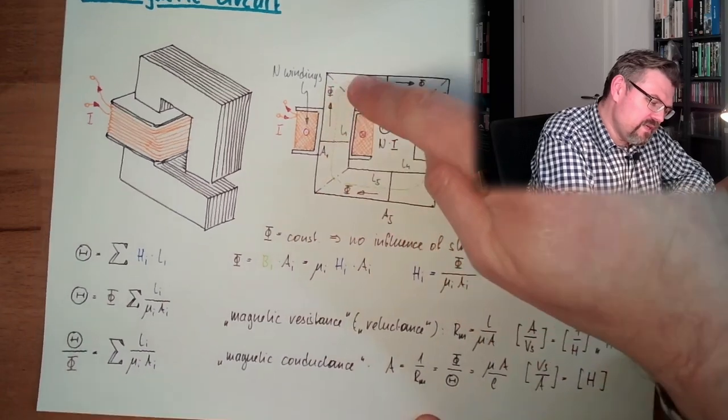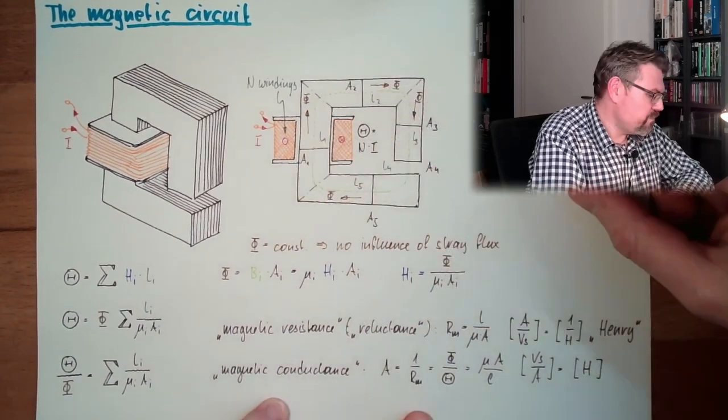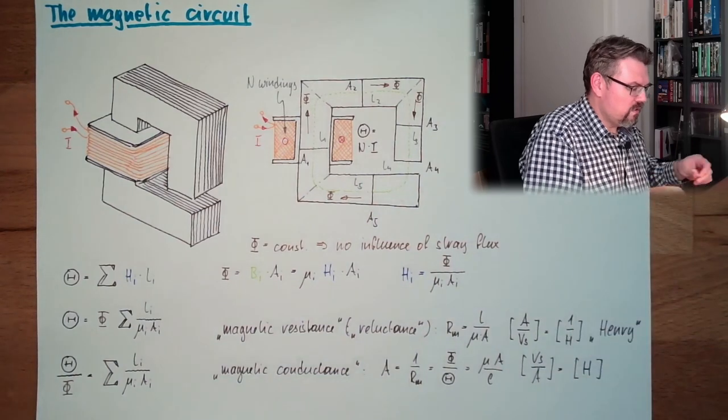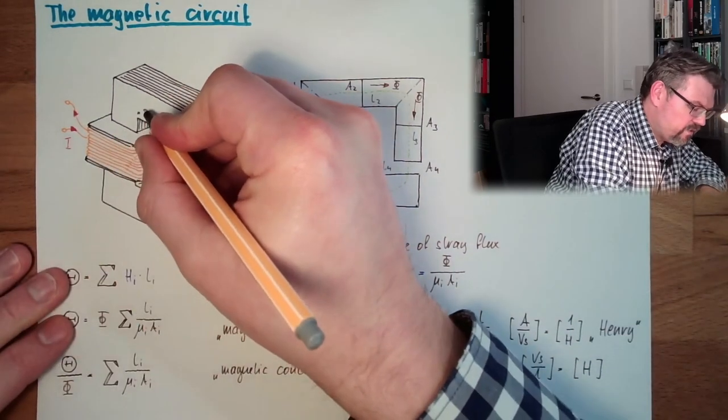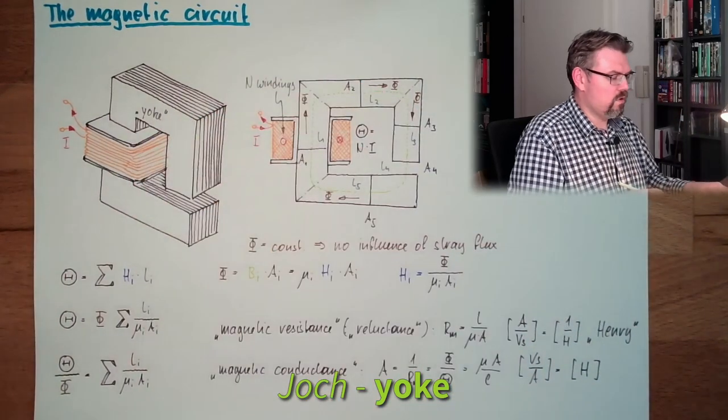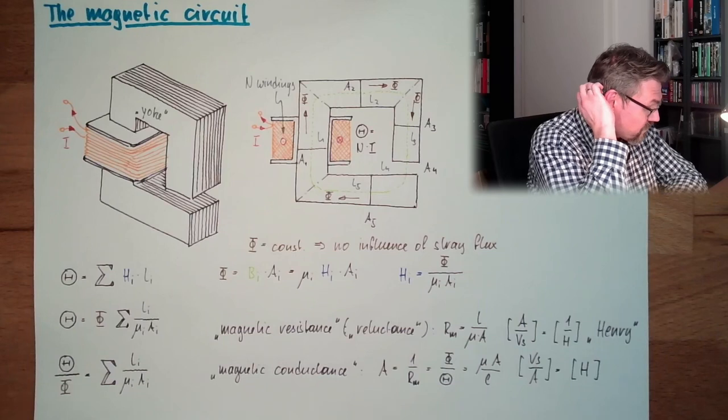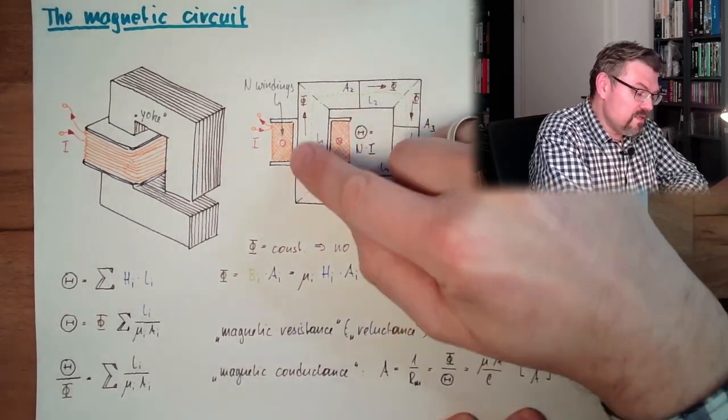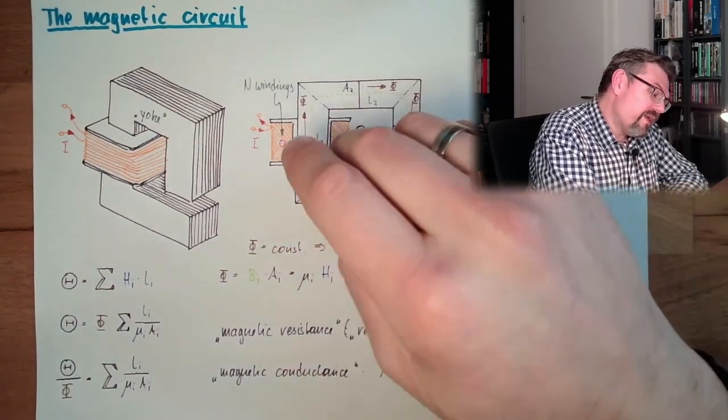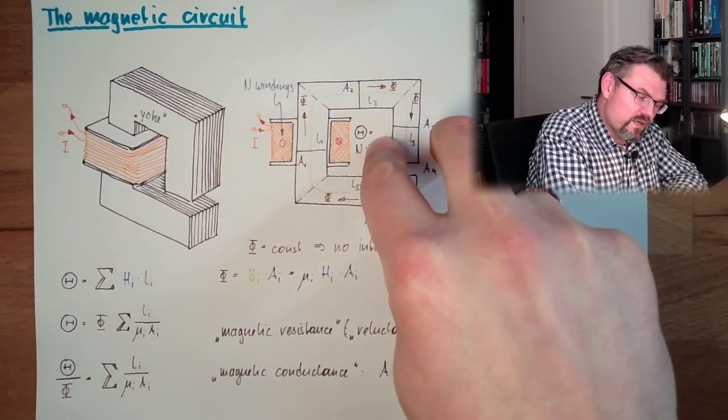And those things here, the iron, they are simply there. This, by the way, is called yoke. Yoke is this thing. No joke, it's a yoke. This yoke is usually there that we can get the magnetic field from where it is produced to where it is used.